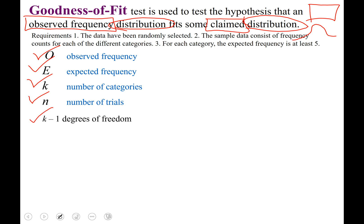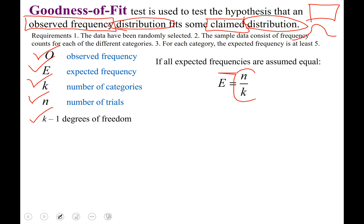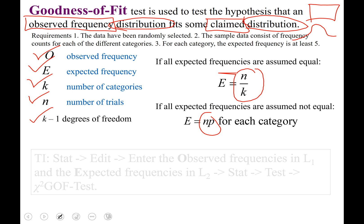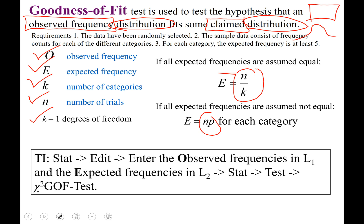If all expected frequencies are assumed to be equal, you can calculate those expected frequencies with the simple fraction: number of trials divided by number of categories. If all expected frequencies are assumed not equal, you calculate your expected frequency as n times p — the number of trials multiplied by the probability of success for each category. That lowercase p is the probability of success, as we've used in past sections.